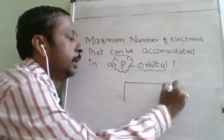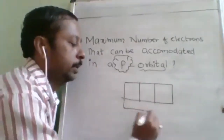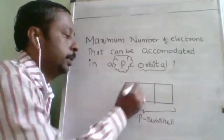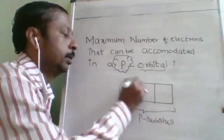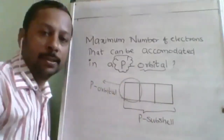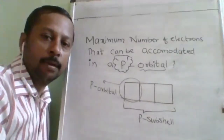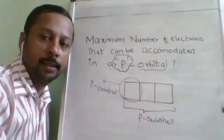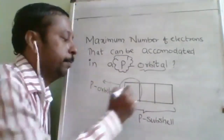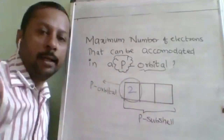This entire thing is p sub shell. And this is p orbital. Now tell me your answer. The maximum number of electrons that can be accommodated in a p orbital — people are now understanding — the answer is two.